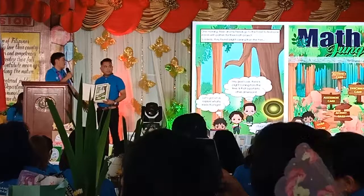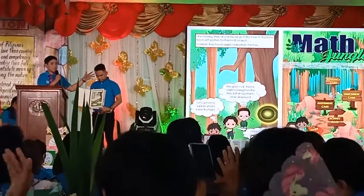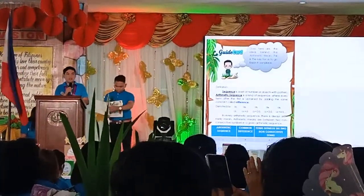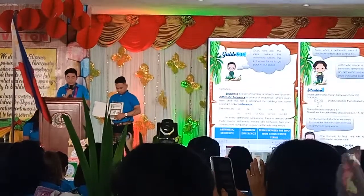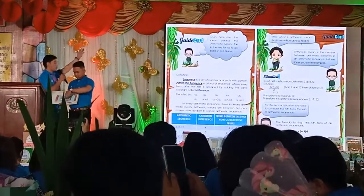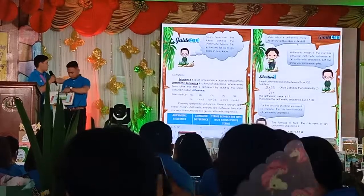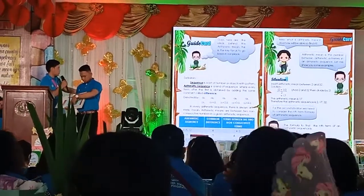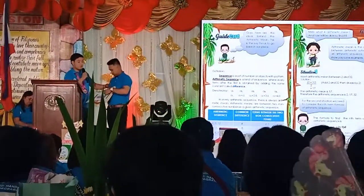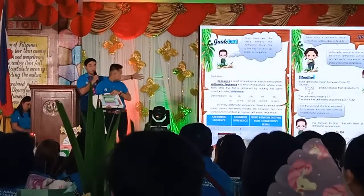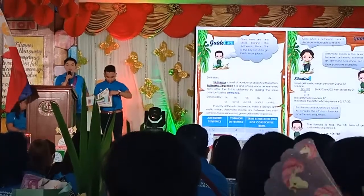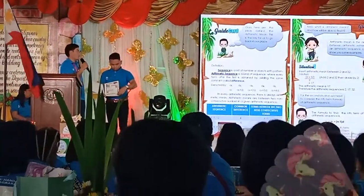We have the guide card, activity card, assessment card, and enrichment card. The guide card gives the overview of the lesson and presents examples of the core skill. We have the definition of arithmetic sequence and mean. The table shows arithmetic sequence, common difference, and the arithmetic mean of a given arithmetic sequence. We have examples for situation number one and situation number two, including inserting more than one arithmetic mean.